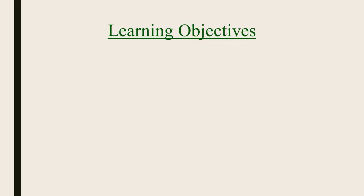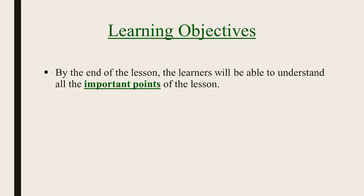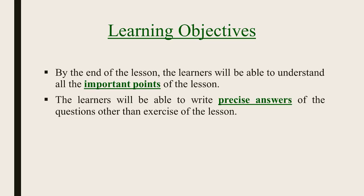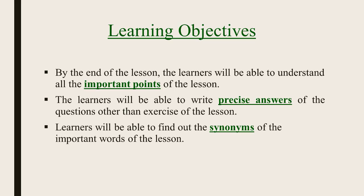First of all, we are going to have our learning objectives. First learning objective is, by the end of the lesson, the learners will be able to understand all the important points of the lesson. Our second learning objective is, the learners will be able to write precise answers of the questions other than the exercise of the lesson. And our last learning objective is, learners will be able to find out the synonyms of the important words of the lesson.